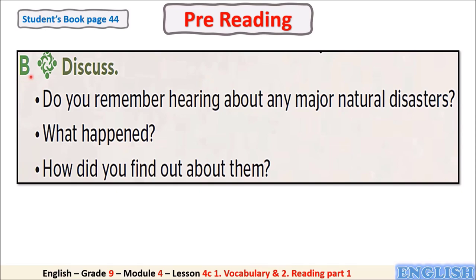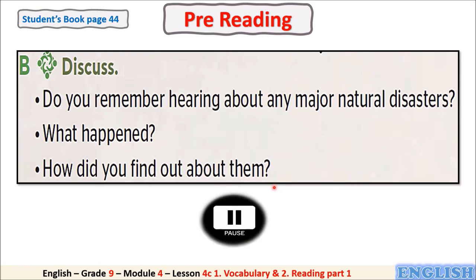Let's move to exercise B in the student's book page 44: 'Discuss.' This is a pre-reading activity. We are going to answer three questions before reading the text: Do you remember hearing about any major natural disasters? What happened? And how did you find out about them? Now pause the video, think, then answer these questions.